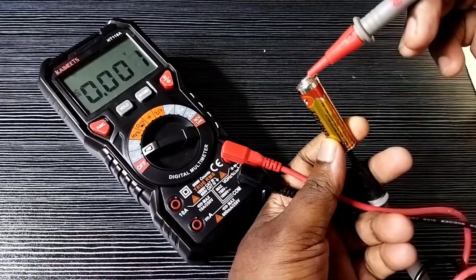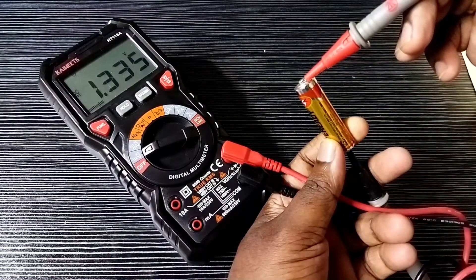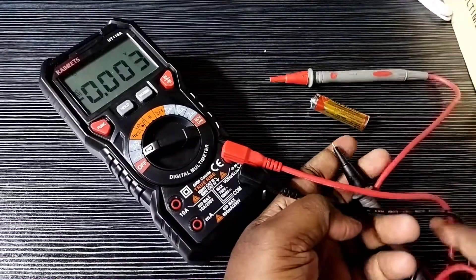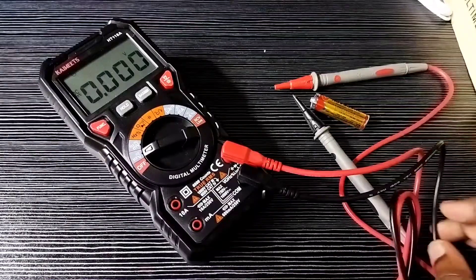This is a 1.5 volt battery. You can see in the multimeter it's showing 1.3 voltage. So this way we can test it.